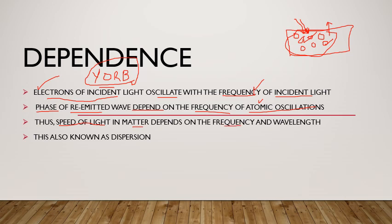تو ہم کہہ سکتے ہیں کہ speed of light matter کے اندر depend کرتی ہے frequency کے اوپر، اور جب frequency کی بات کرتے ہیں تو wavelength بھی آتی ہے۔ Frequency اور wavelength دو ایسے points ہیں جن پر speed of light in matter depend کرتی ہے۔ اگر material specify نہ کیا گیا ہو تو v = f·λ سے بھی find out کر سکتے ہیں۔